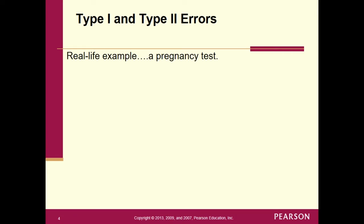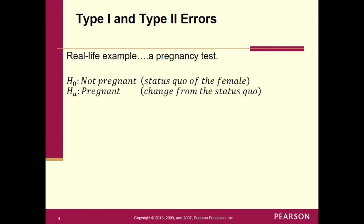To give a real-life example: a pregnancy test gives the most clear-cut way of thinking about this. Put yourself in this situation. A hypothesis test is basically being run in the background. The null hypothesis is the status quo — the female is not pregnant — and the alternative is that she is pregnant, a change from the status quo.